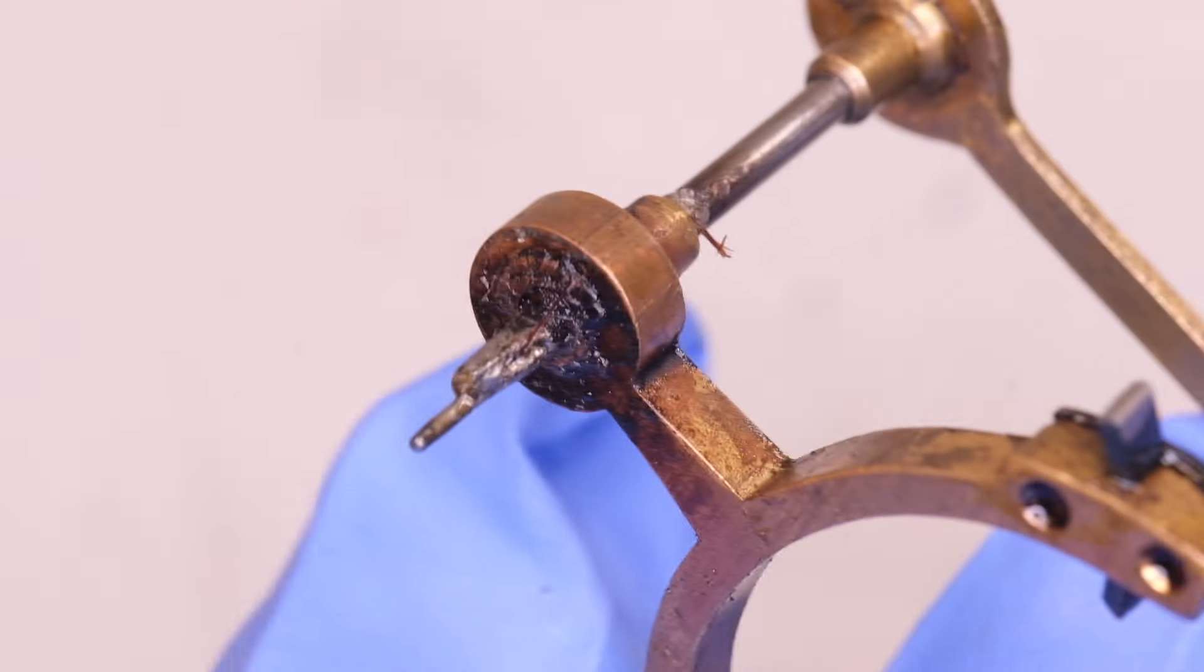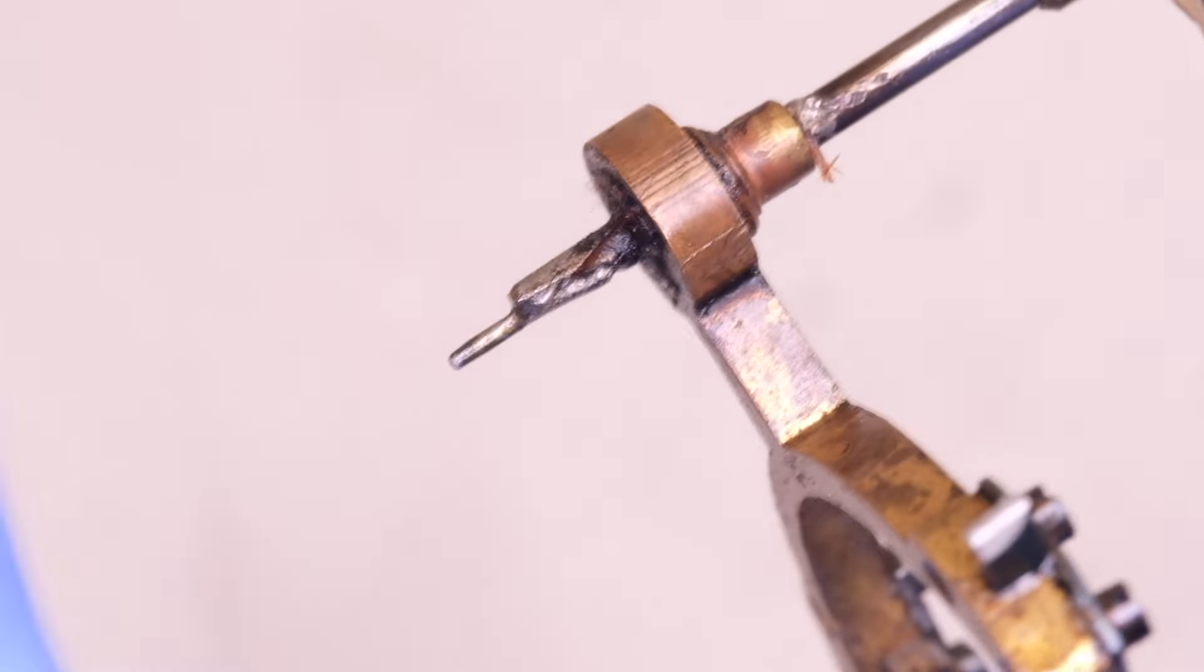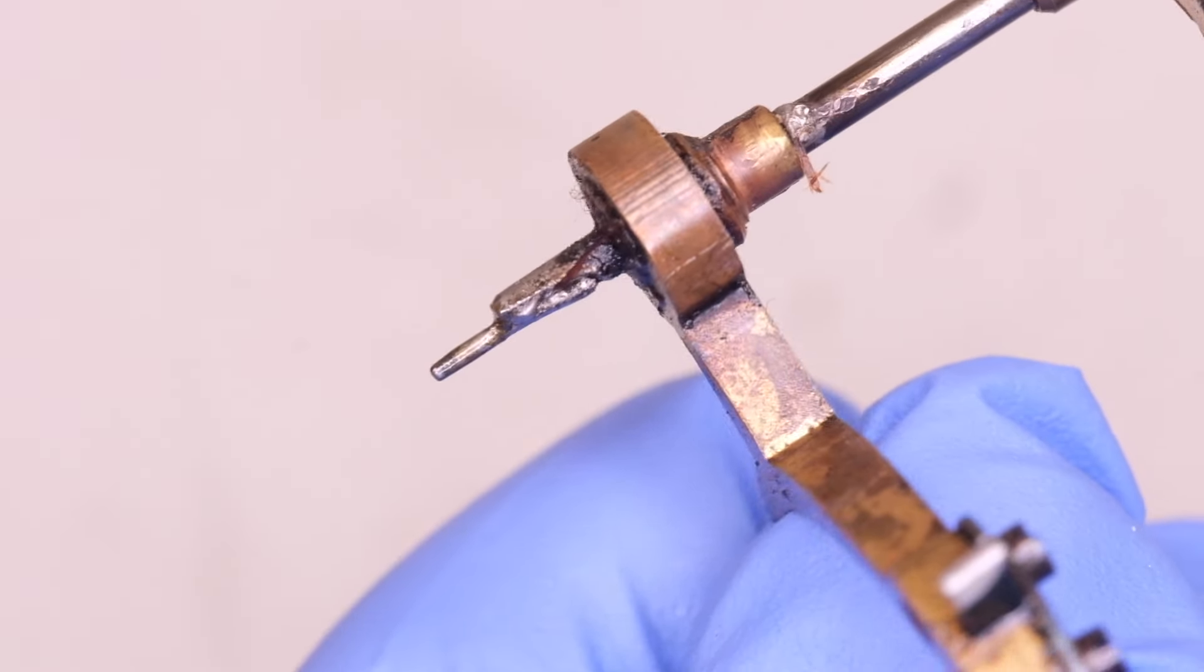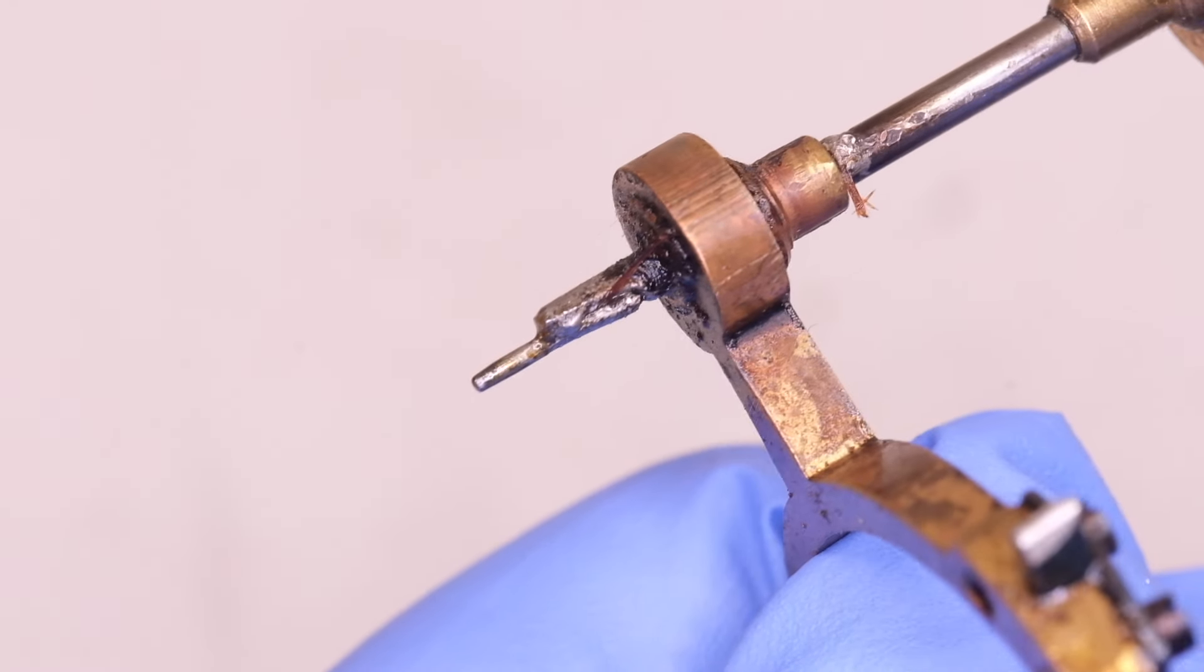The first of those is that the front pallet arbor pivot at some time has been broken off and a new one has been fitted by soft soldering.